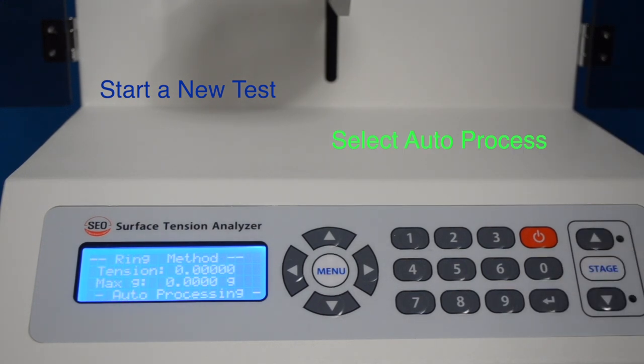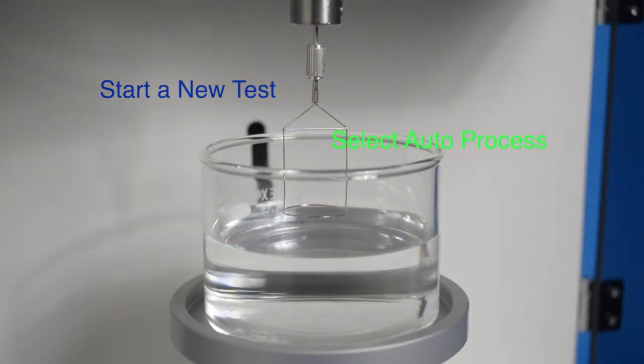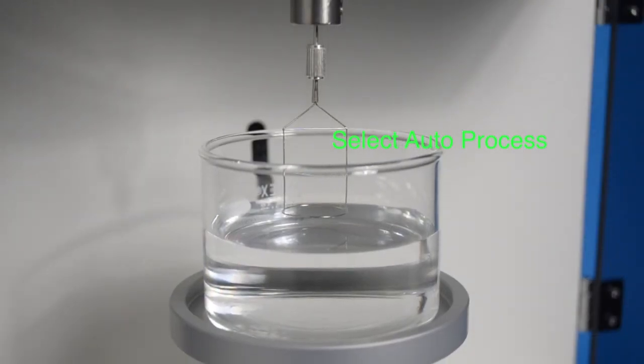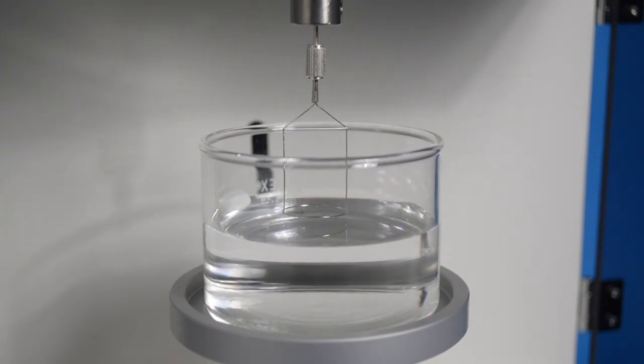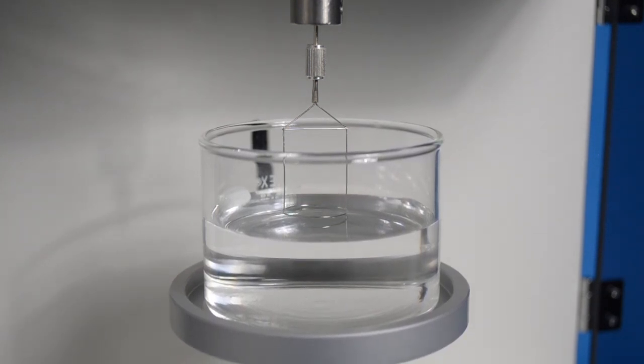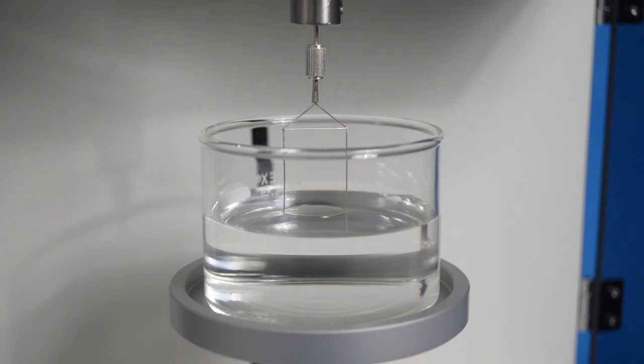To start a new test on the same type of product or the same product, all you do is select autoprocess and immediately the stage starts to move up on the ring.